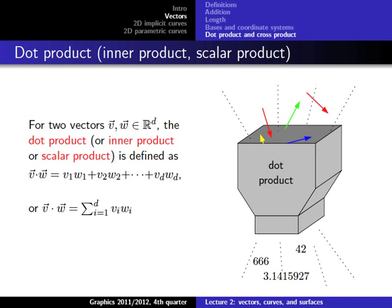There are different ways to define multiplications in relation to vectors that are very useful in graphics. We've already seen one — scalar multiplication — but that is not the multiplication of two vectors. Now we're talking about the multiplication of two vectors. In algebra there are two important ones useful in graphics: the dot product and the cross product. The dot product, also called the inner product or scalar product, takes two vectors and produces a scalar value — that's where the name scalar product comes from.